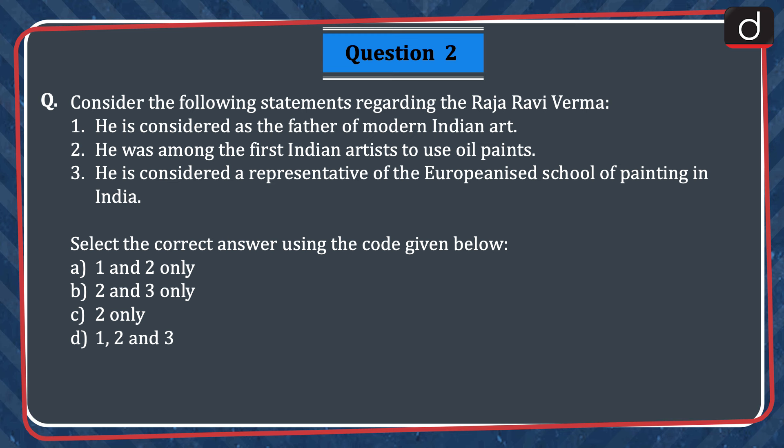Next question: consider the following statements regarding Raja Ravi Verma. 1. He is considered the father of modern Indian art. 2. He was among the first Indian artists to use oil paints. 3. He is considered a representative of the Europeanized School of Painting in India. Select the correct answer using the codes given below: 1 and 2 only, 2 and 3 only, 2 only, or 1, 2 and 3. The correct answer is option D, 1, 2 and 3.